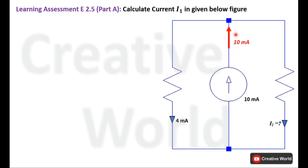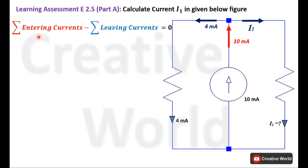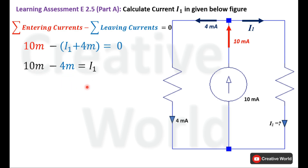At this node, 10 mA is entering while I1 and 4 mA are leaving. We apply Kirchhoff's current law: the sum of entering currents minus the sum of leaving currents equals zero. Placing the values and rearranging the equation gives us I1 equal to 6 mA.